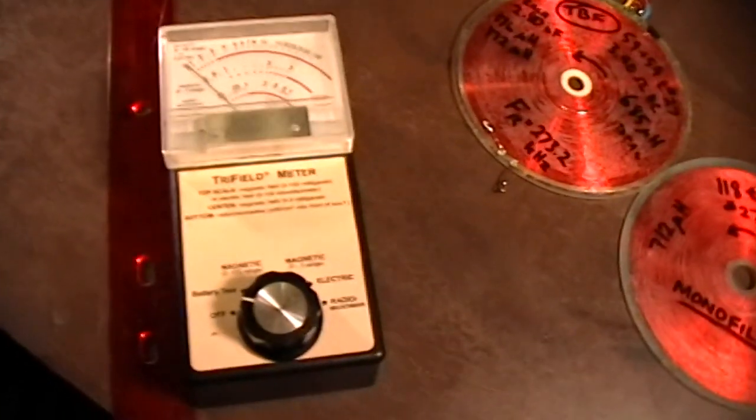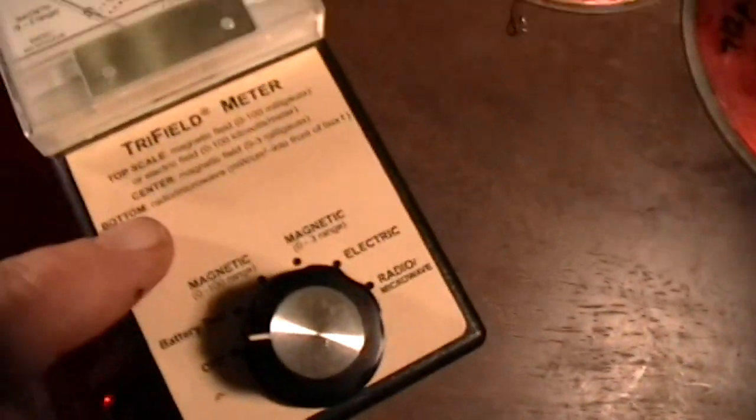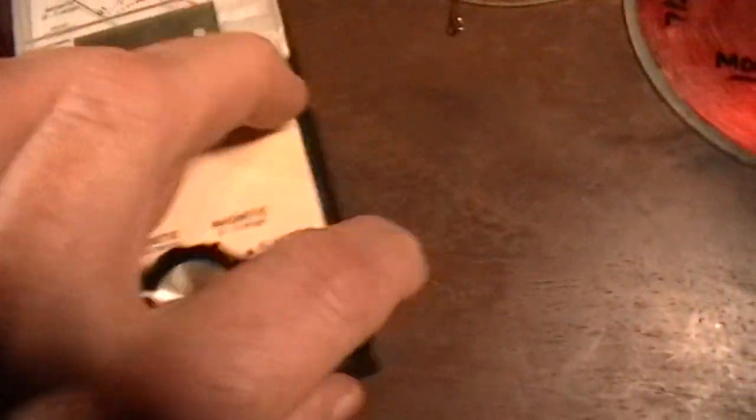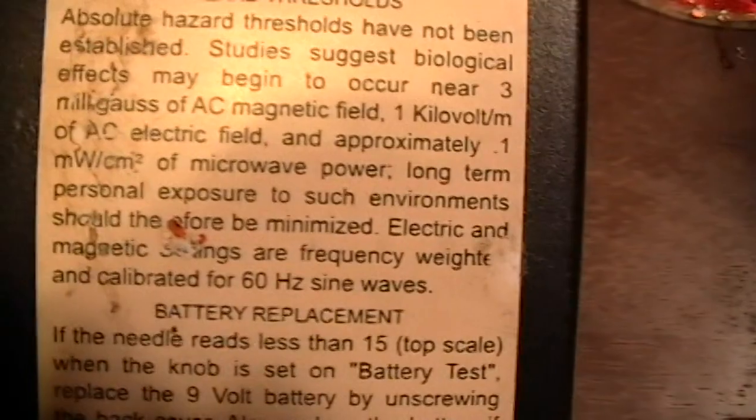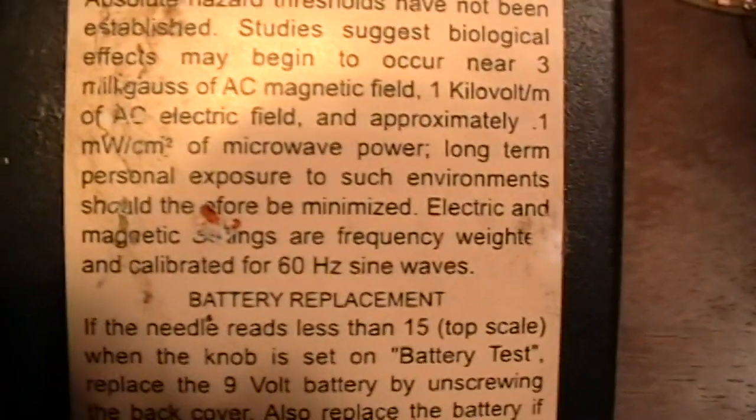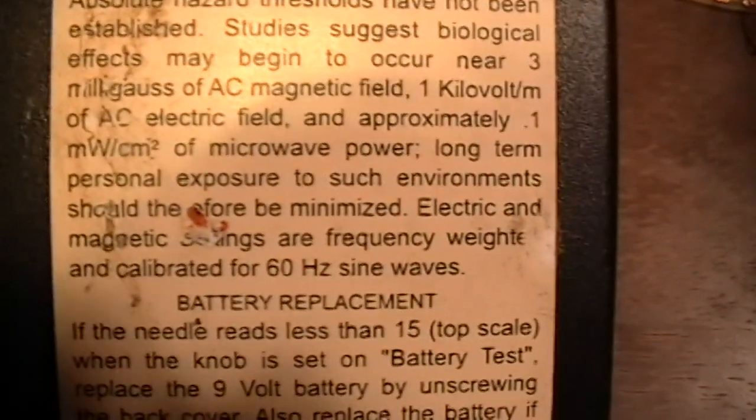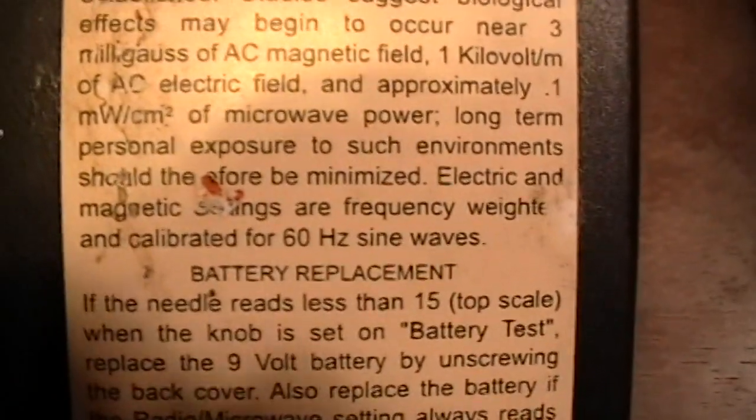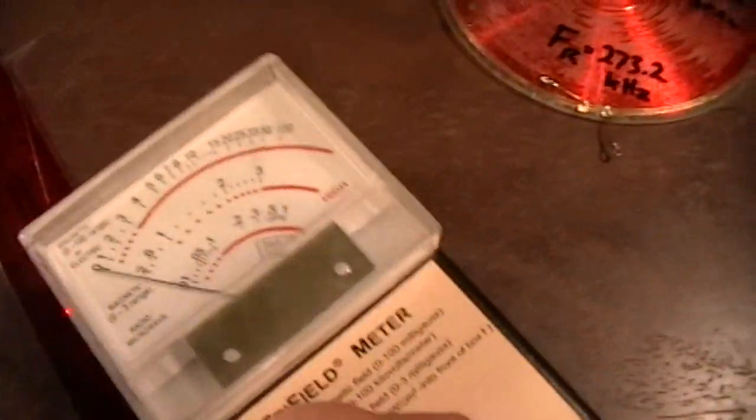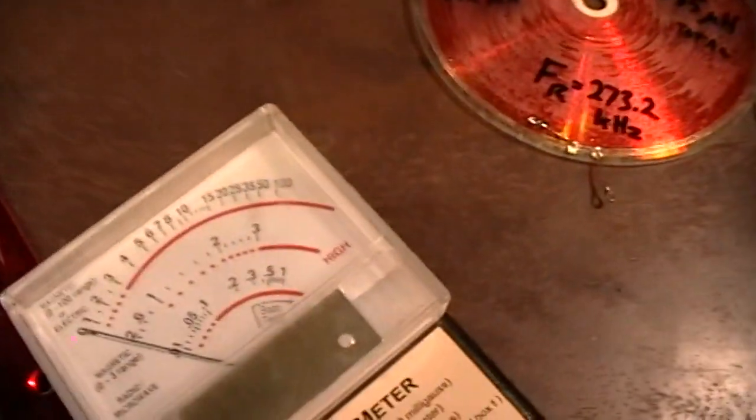First of all, just to show you that there's no trickery or anything. This tri-field meter, as it says on the back, is optimized for 60 hertz. Magnetic settings are frequency-weighted and calibrated for 60 hertz sine waves. It doesn't detect stationary magnetic fields, only detects alternating magnetic fields.